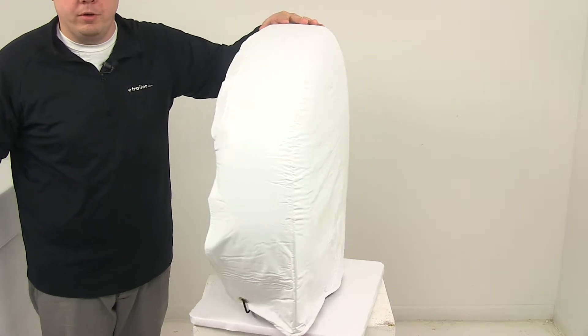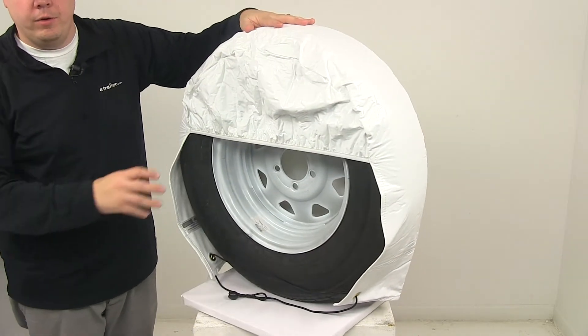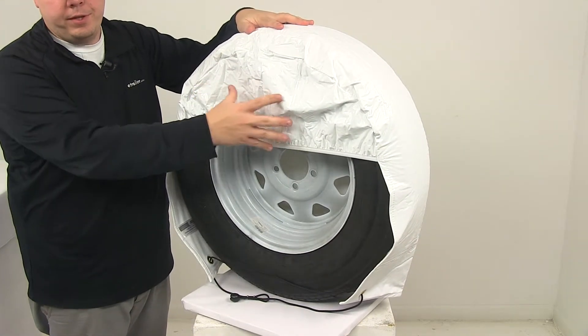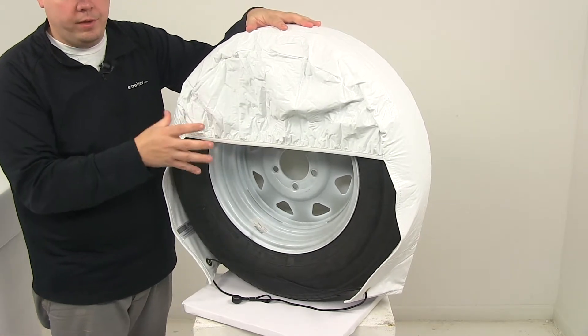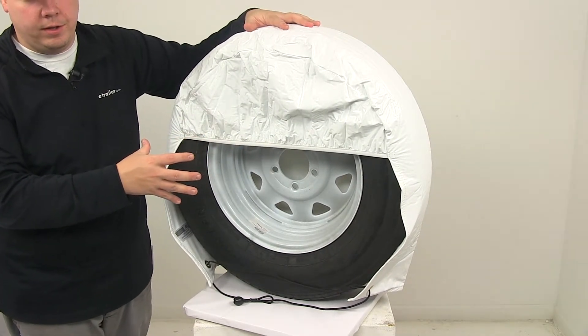They slip over the tire and wheel for a quick and easy fit. Here on the back you'll notice a skirt that offers protection to the upper back of the tire and wheel. Also really helps hold that cover securely onto the assembly.